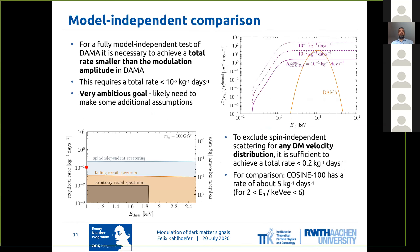But still, if you want to perform a fully model-independent test of DAMA, what you need to do is achieve a total rate which is smaller than the modulation amplitude seen in DAMA. And if you want to do this with essentially no other assumptions, this means that the total rate you need to achieve is of the order of 10^{-2} events per kilogram per day. This is a very ambitious goal, even for an experiment like COSINUS.